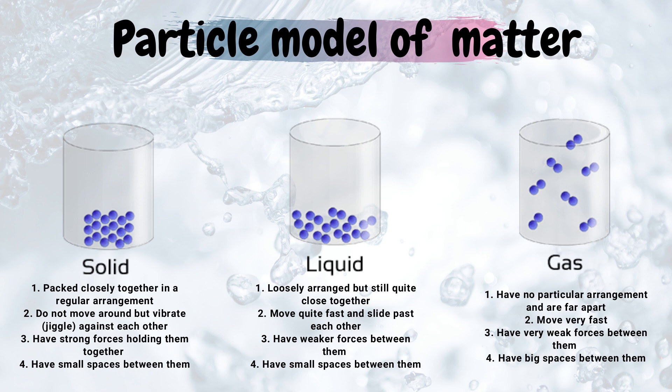In liquids, the particles are loosely arranged, which means that a liquid will take the shape of its container. If you pour water into a container it will take that shape, and if you pour it on the ground it will still remain as a liquid. When it comes to gases, the particles have no particular arrangement.